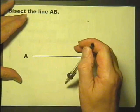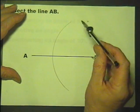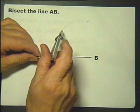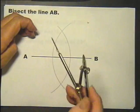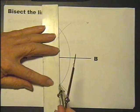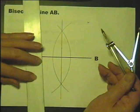So you open the compasses to more than halfway, stick it in one end of the line, draw an arc. Keep the radius the same and stick it in the other end and draw an arc. If you now draw a line through where those two arcs have crossed, you have effectively bisected the line.